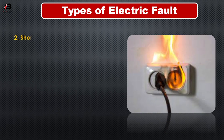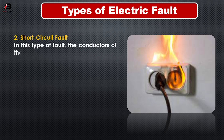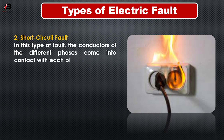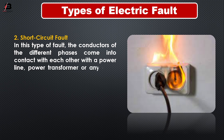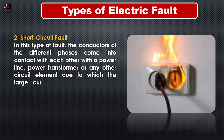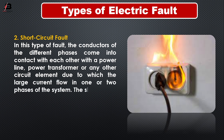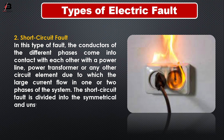Number two: short circuit fault. In this type of fault, the conductors of different phases come into contact with each other — with a power line, power transformer, or any other circuit element — due to which the largest current flows in one or two phases of the system. The short circuit fault is divided into the symmetrical and unsymmetrical fault.